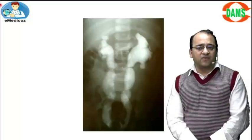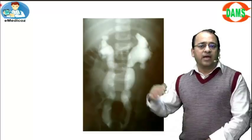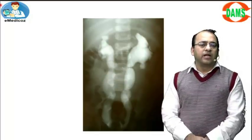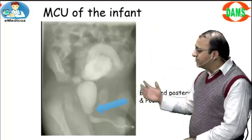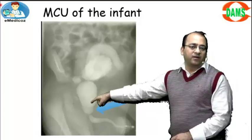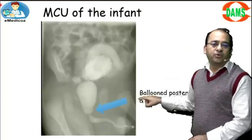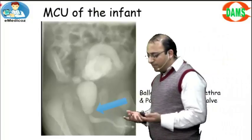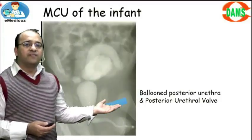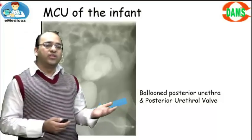The investigation of choice for VUR is a micturating film. On screen is another MCU showing a posterior urethral valve — a bladder with a very narrow neck and a dilated posterior urethra. We commonly see these children with posterior urethral valves.